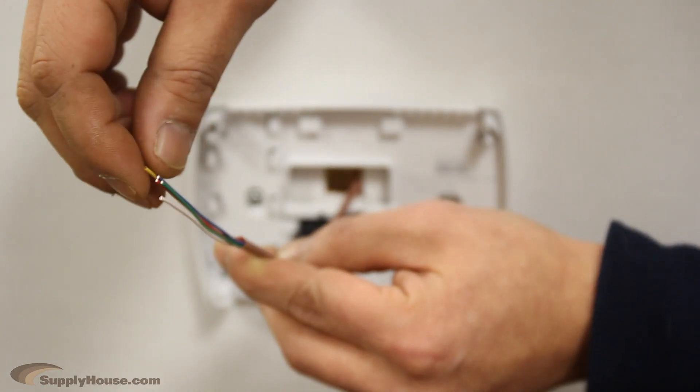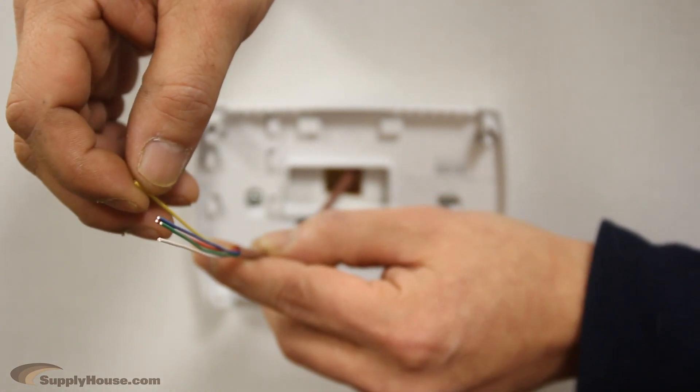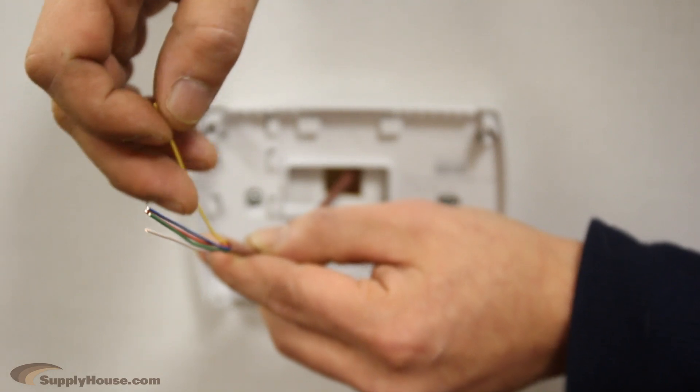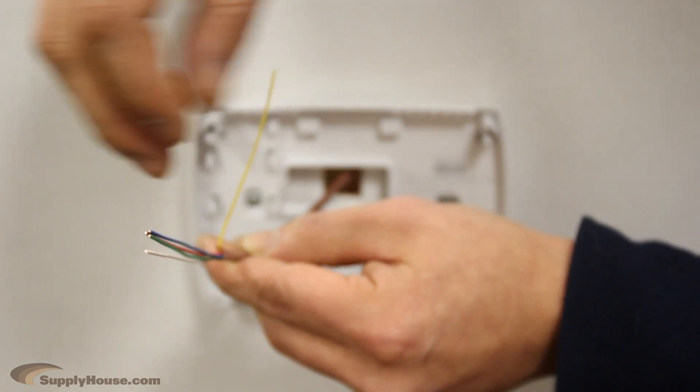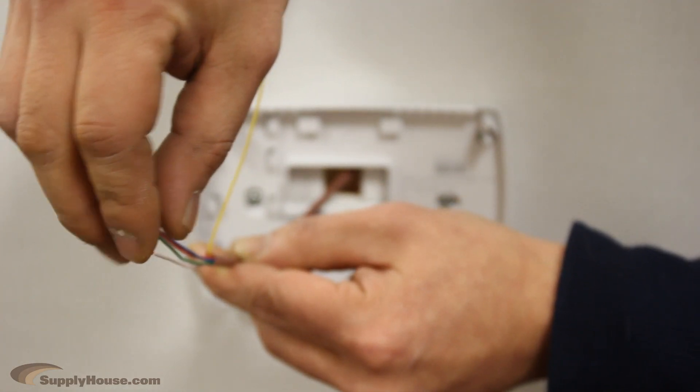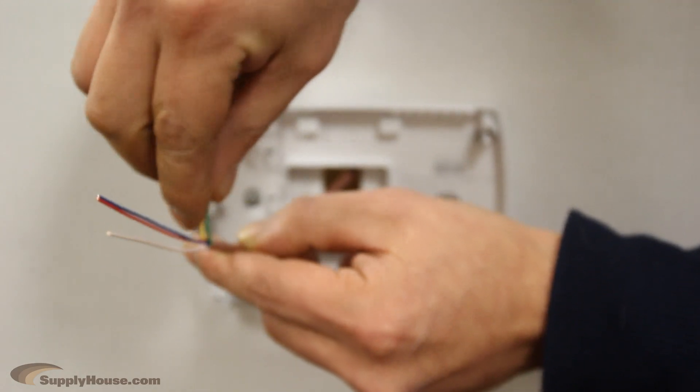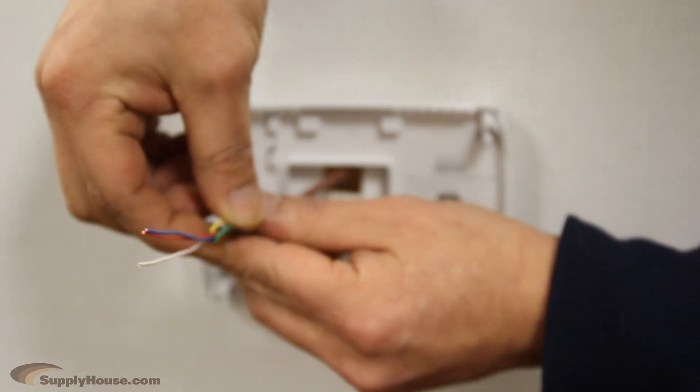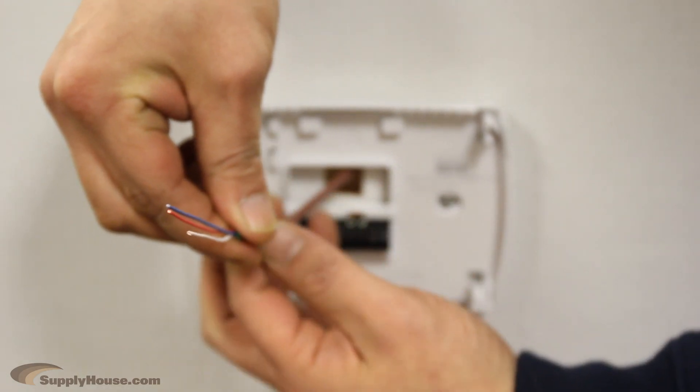The wiring we are using is 18 gauge with five conductors. For this demonstration, we'll say that it's a heat-only setup, so there's only one wire. You will want to peel back the wires you aren't using. In this case, we will peel back yellow and green. The colors don't technically matter, but they are an easy way to remember.